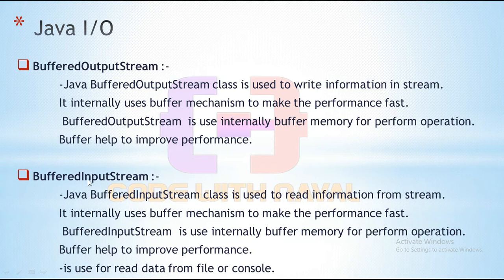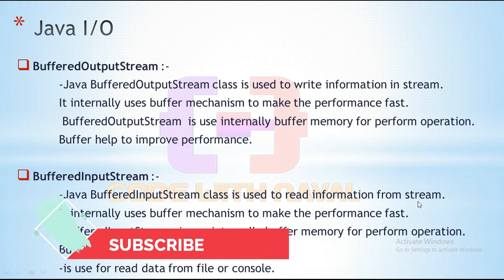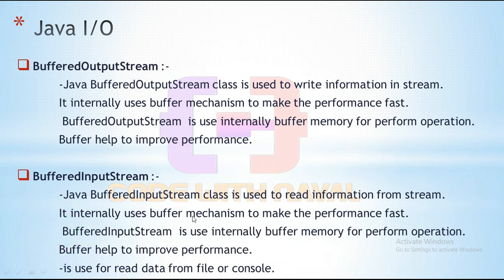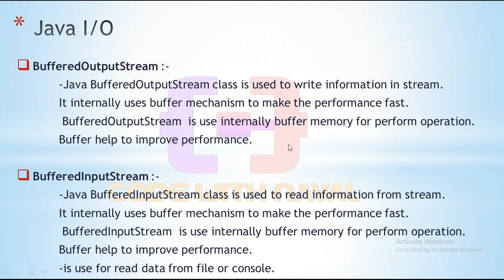BufferedInputStream class is used to read information from a stream. It also internally uses a buffer mechanism to make performance faster. BufferedInputStream uses internal buffer memory to perform operations, and that buffer helps to improve performance — it is used to read data from a file, console, or socket. Both BufferedInputStream and BufferedOutputStream use buffer memory internally to improve performance.